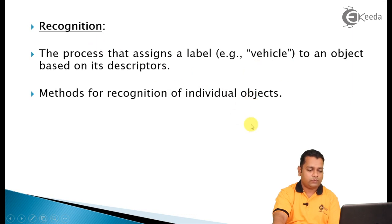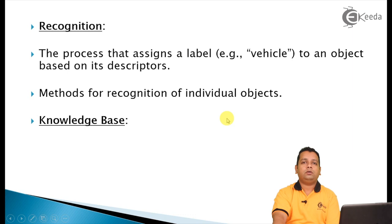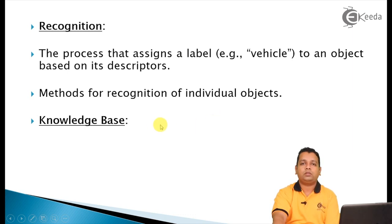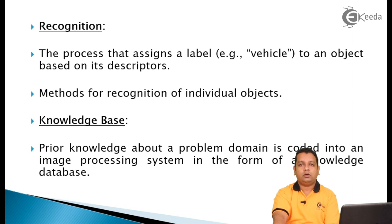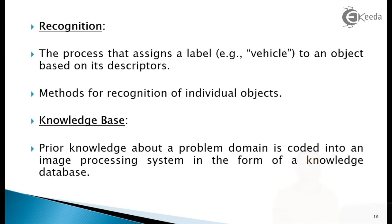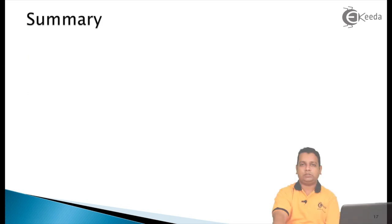Methods of recognition of individual objects are involved in this step. All these fundamental steps are connected through the knowledge base shown in the block diagram. The knowledge base can be described as prior knowledge about a problem domain coded into the image processing system in the form of a knowledge database — the most important element for carrying out these fundamental image processing steps.